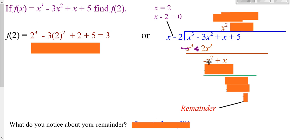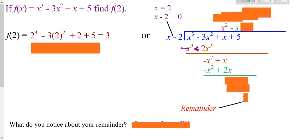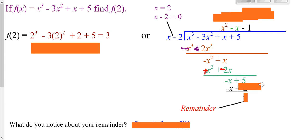x times what is negative x squared? Negative x. Take green negative x times each one of these: green negative x times x, green negative x times negative 2. Switch our signs and add. Our squareds drop. One of the x's plus negative 2 of the x's. Bring down your next term and repeat. x times what is negative x? That's negative 1. Take that black negative 1 times each thing in front. Switch your signs and add, and we get 3.